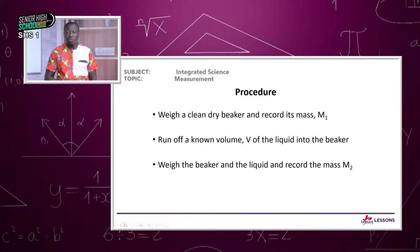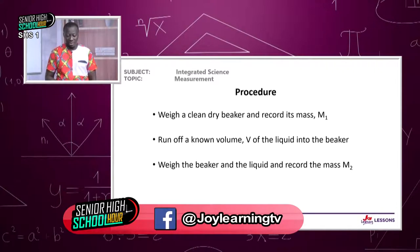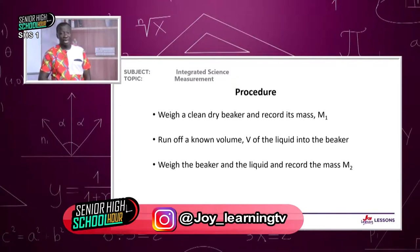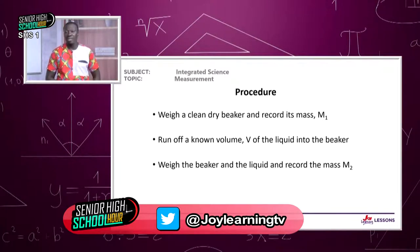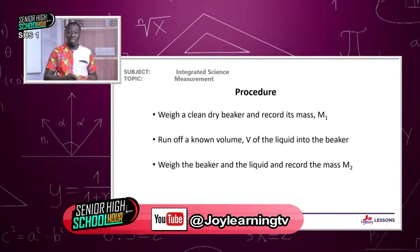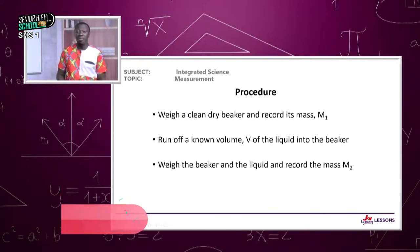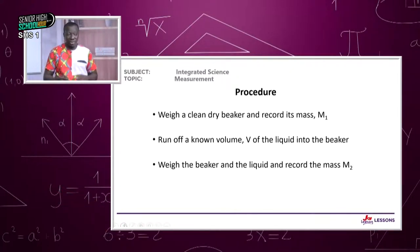If we have these apparatus, how do we determine the density of a substance? Since we have to measure the mass of the object, we make sure everything is clean and dry. You weigh a clean, dry beaker and record its mass M1. You set your weighing scale, drop the beaker on it gently, wait for it to stabilize, and record the mass M1.